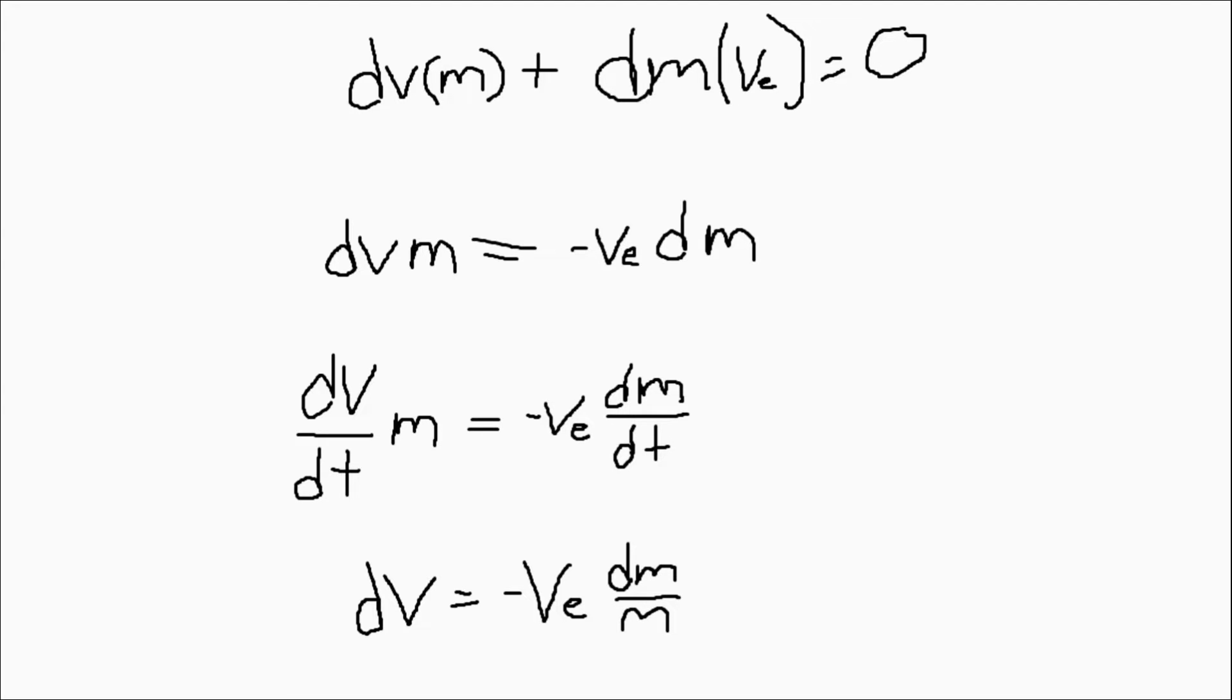Now we have an equation that says that delta V is equal to the negative value of the velocity of the exhaust over a change in mass over the mass of the rocket. This does technically give us an answer for the value of delta V, but it isn't very practical and it would be easier to just have the initial mass and the final mass of the rocket. To attain this form of the equation, we need to integrate.